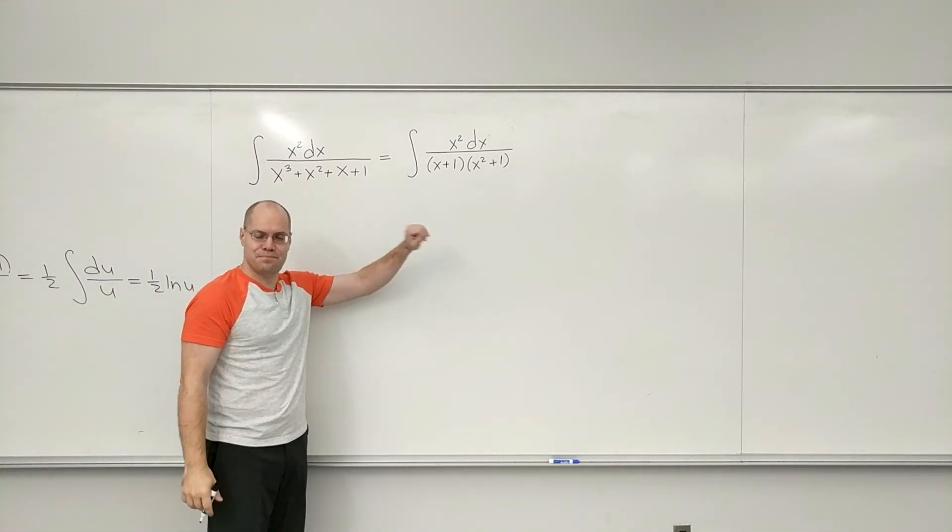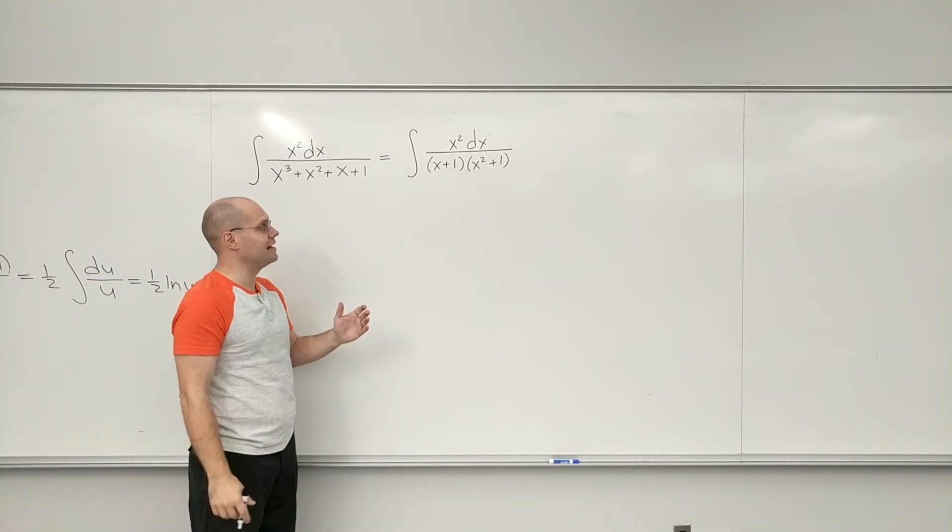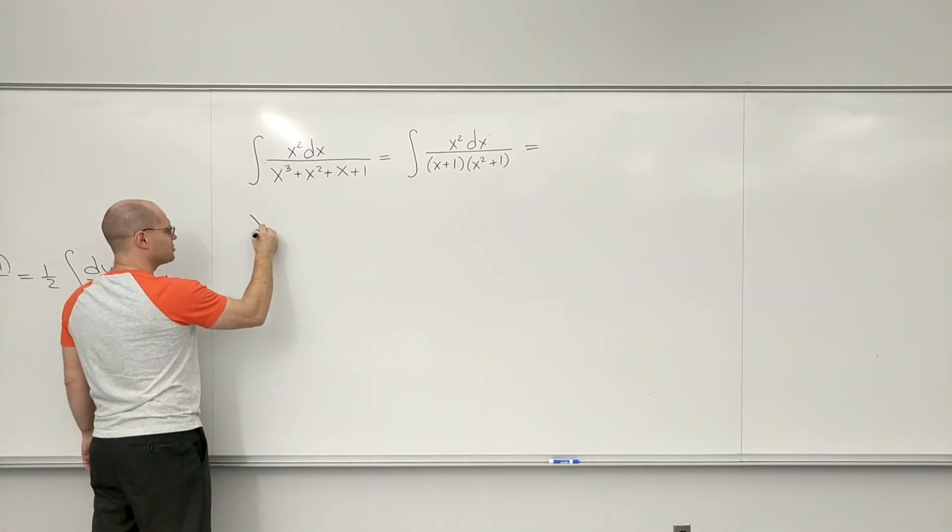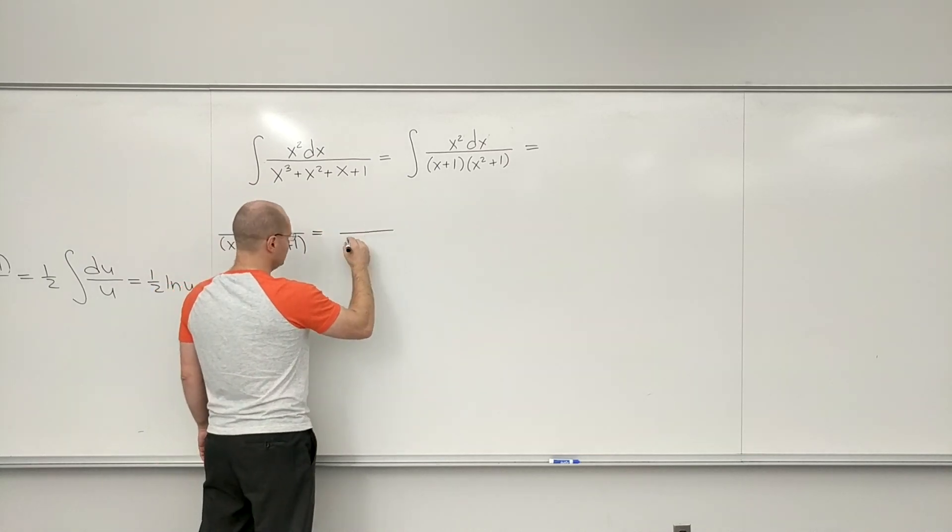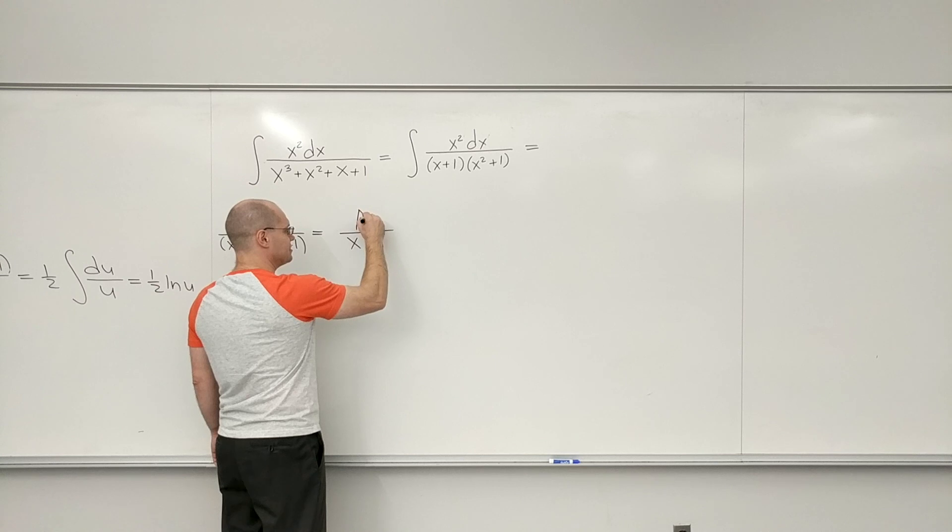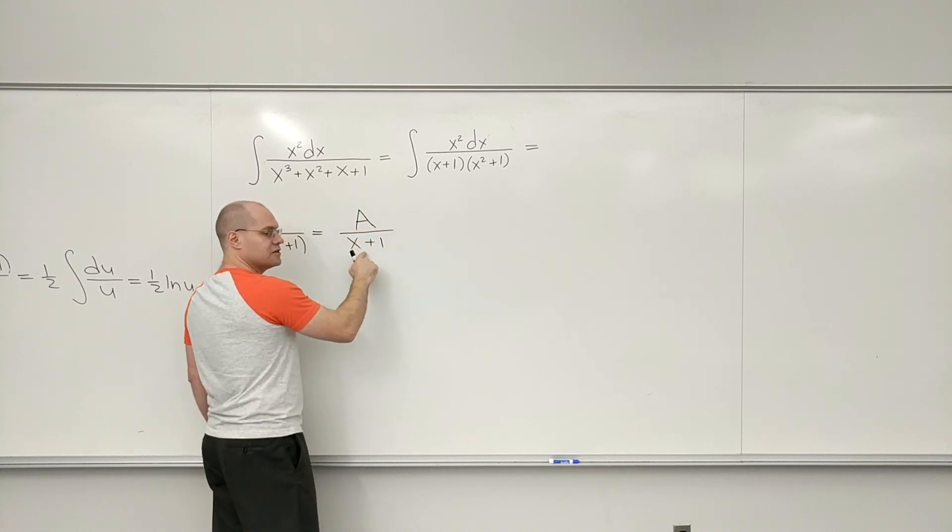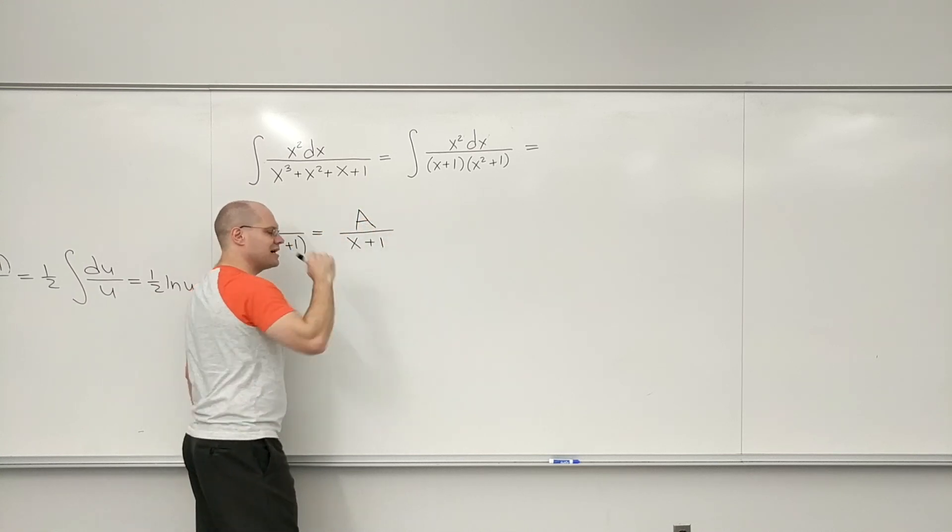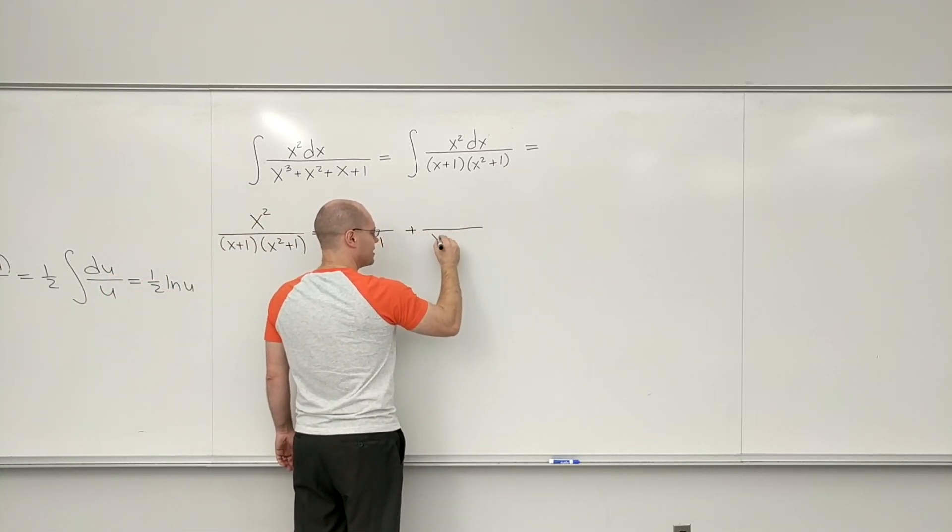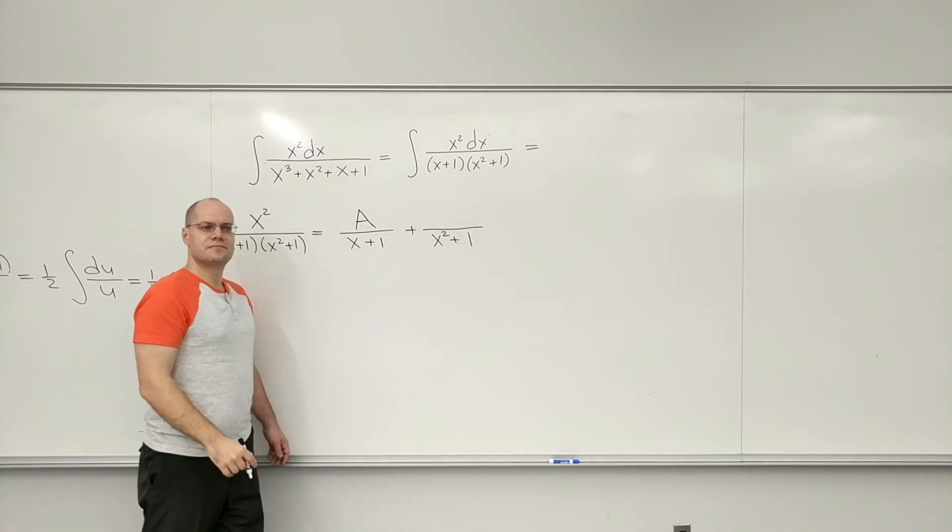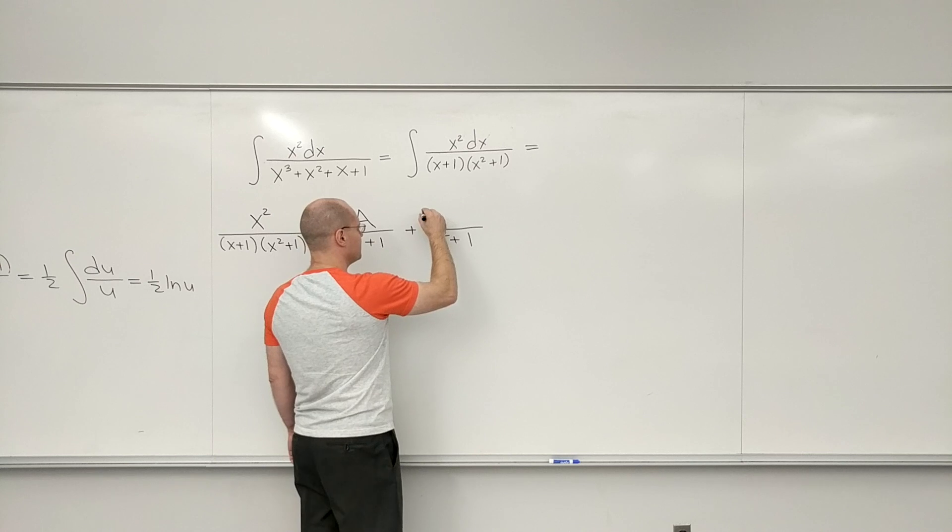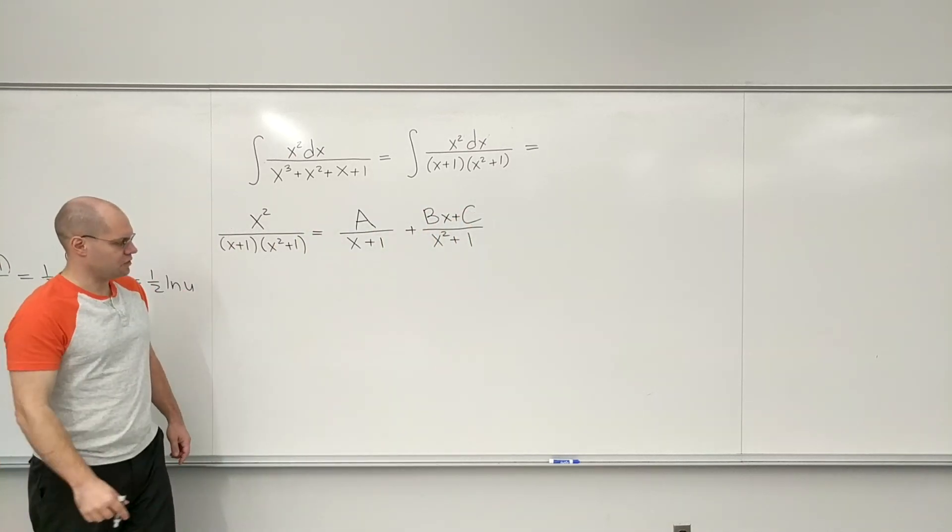So now I will take the partial fractions procedure offline because I don't like doing it under the integration sign. Let's just do it on its own. One has x plus 1 on the bottom and A on top because it's a linear function in the denominator, so a constant in the numerator. Plus in the denominator we have x squared plus 1. So we must go with the linear function in the numerator: Bx plus C.